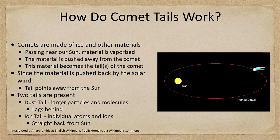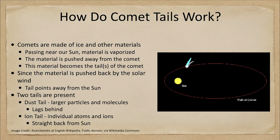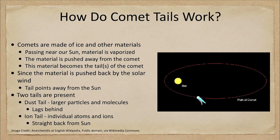Now let's take a look at this in terms of an animation and we can watch the tails. You'll note that as the comet starts to come in, the tails are lagging behind the comet. But as it loops around the Sun and leaves, the tails lead the comet. So the tails do not follow along as you might expect — they actually always point away from the Sun.